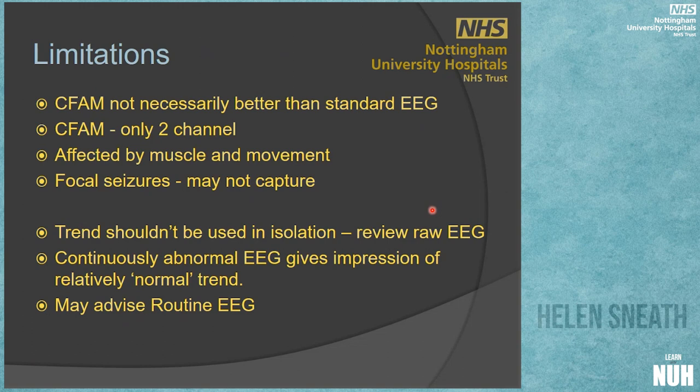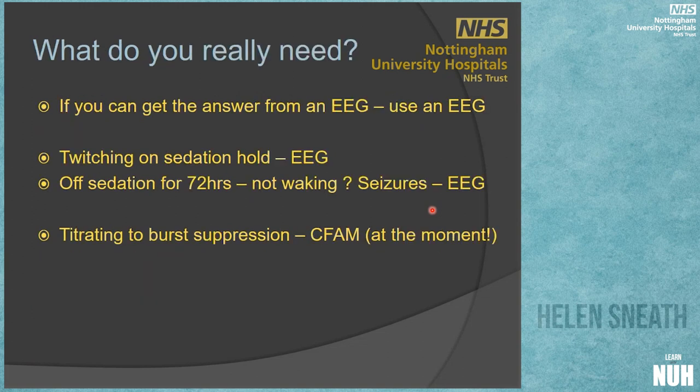Even if you refer for a CFAM, there might be clues on the referral where we think an EEG would be a better choice. For example, if you've got a patient who's just twitching and jerking all the time, you'd be better off having a full EEG because you know you're going to capture the event in 20 or 30 minutes and you've got more electrodes on the head, making it easier to localise any abnormalities. If you can get the answer from an EEG, I would always say use an EEG.